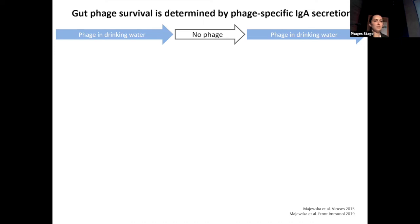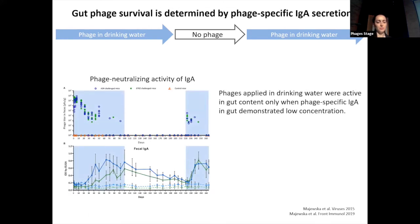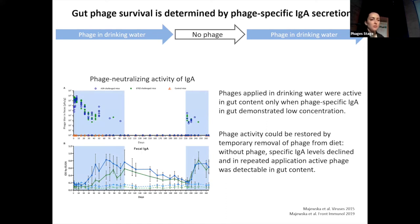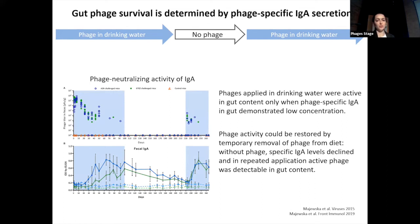Moreover, gut phage survival is determined by phage-specific IgA secretion. Plots demonstrate that phages applied in drinking water were active in gut content only when phage-specific IgA in the gut showed low concentration. Phage activity could be restored by temporary removal of phage from the diet, without phage-specific IgA levels declining, and in repeated application, active phage was detectable in gut content.